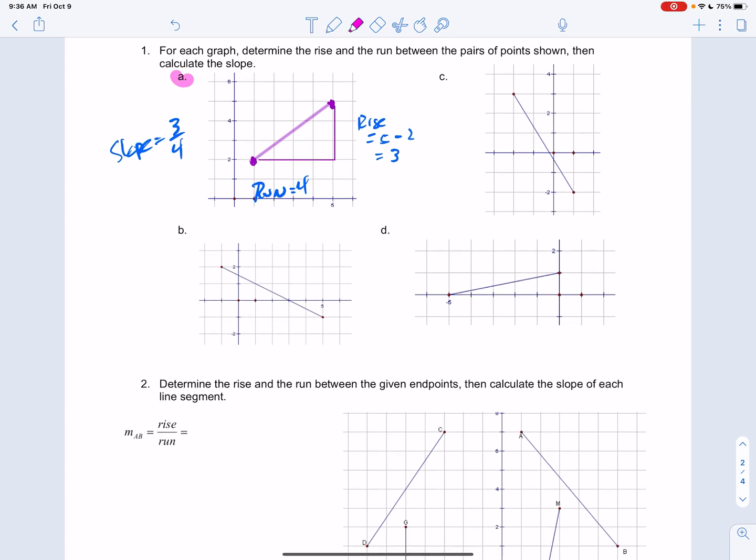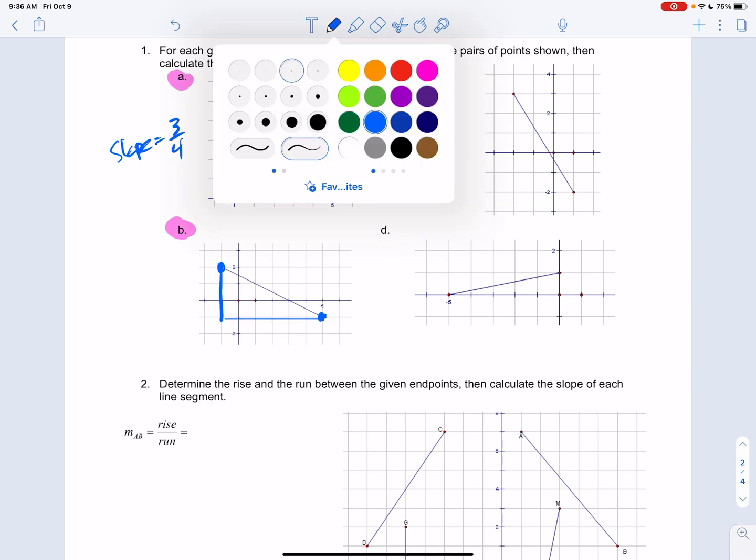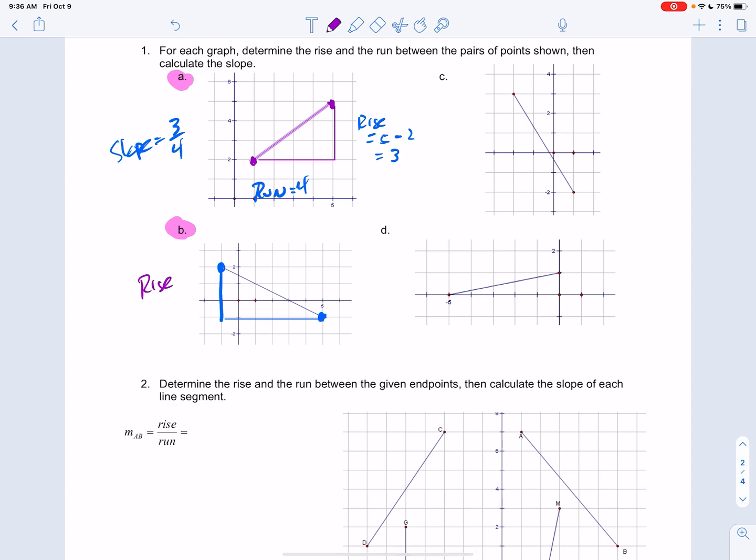Now take a look at B. Same deal. You've got two nice points here to use. Draw yourself your triangle. It always goes, your triangle always goes below. And you want to calculate your rise and your run. Okay. Well, what's my rise here? My rise here is going to be how many boxes? I've got 1, 2, 3 boxes. 3 boxes. My run here is going to be how many boxes? 1, 2, 3, 4, 5, 6 boxes. 6 boxes.